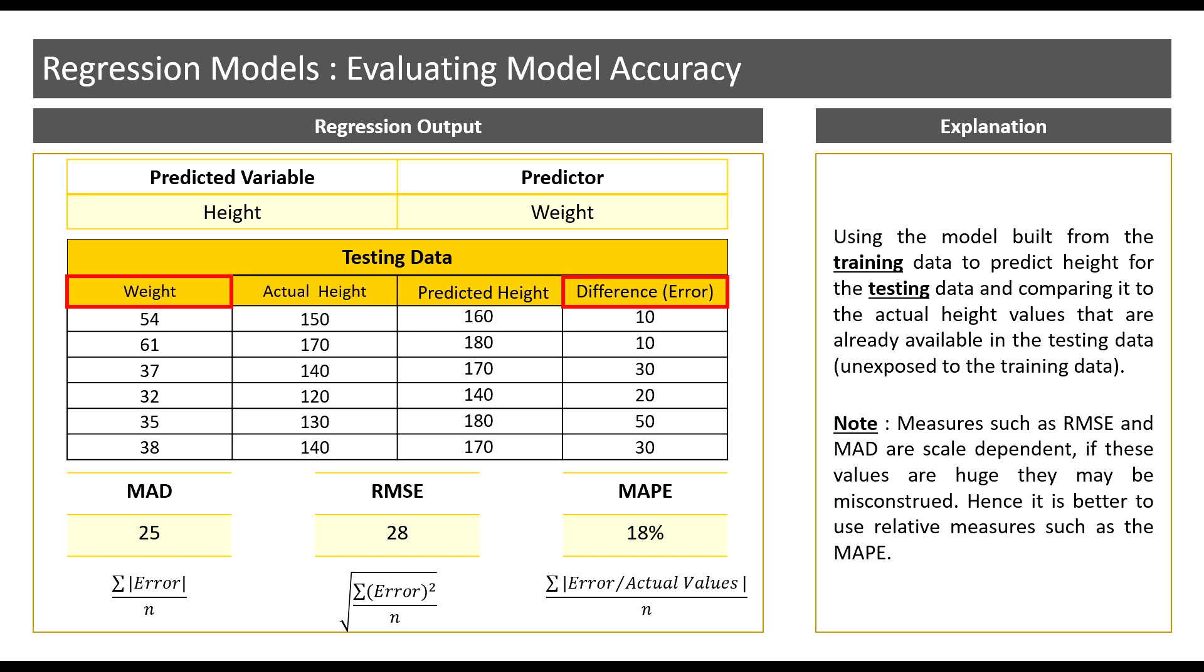Conclusively, measures such as RMSE and MAD are scale dependent and can throw someone off. Hence, relative measures such as MAPE are preferred, as they are not scale dependent and easier to comprehend.